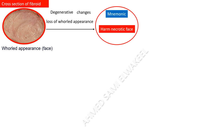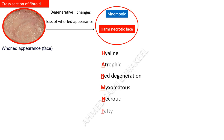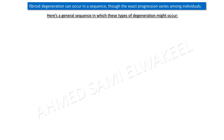In cross-section, fibroids have a whorled appearance — we can say fibroids have a 'whorled face.' After degeneration, the whorled face turns into a 'HARM necrotic face,' and the letters of HARM necrotic stand for all types of degeneration. Fibroid degeneration can occur in a sequence, though the exact progression varies among individuals.